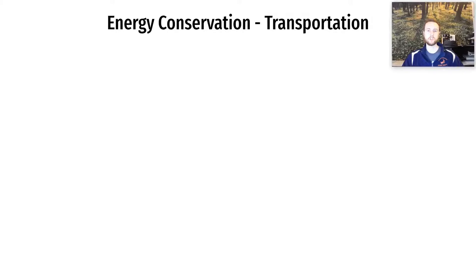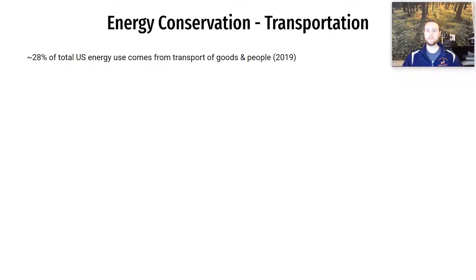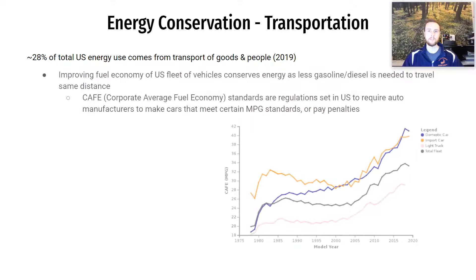For larger-scale energy conservation at the state or national level, transportation is a great place to look. In 2019, 28% of total U.S. energy use went to transportation — both moving goods and people, including shipping. One way to target this and conserve energy is through what we call the CAFE standards.